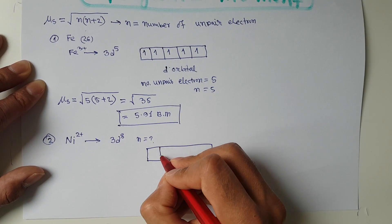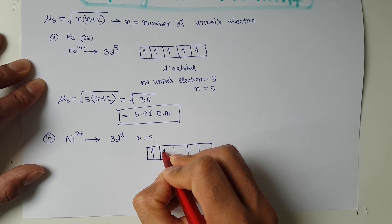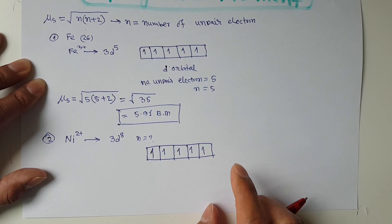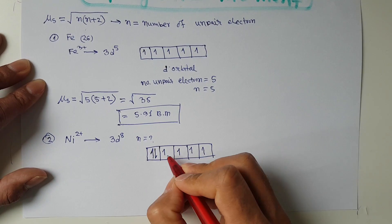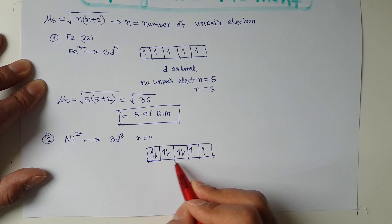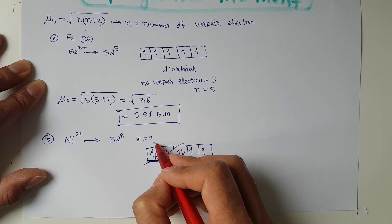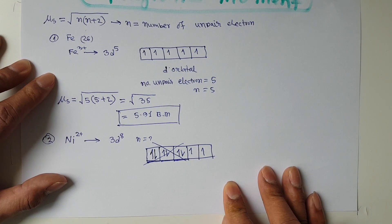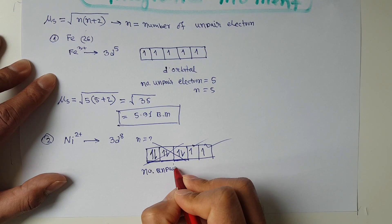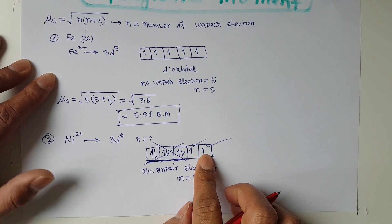The 8 electrons belong to the d-orbital, which is subdivided into 5 subshells. Fill one electron at a time: 1st, 2nd, 3rd, 4th, 5th — then come back and pair up: 6th, 7th, 8th electron. Three subshells now have paired electrons (2 electrons each). Eliminating those paired subshells, only two subshells have single unpaired electrons. So n = 2.